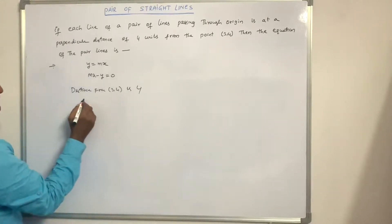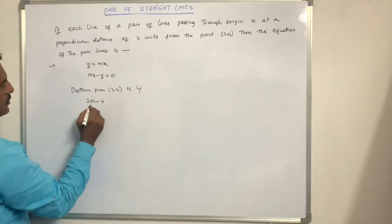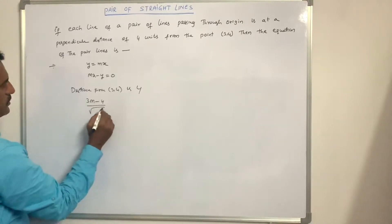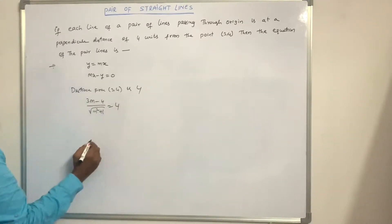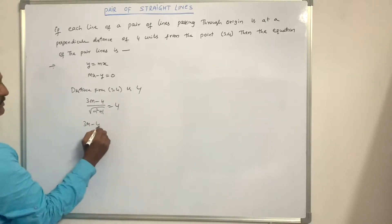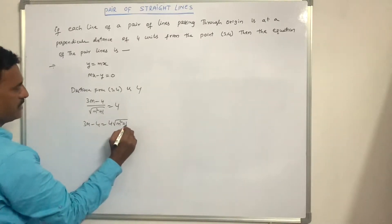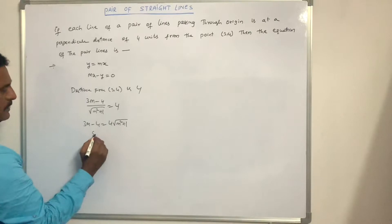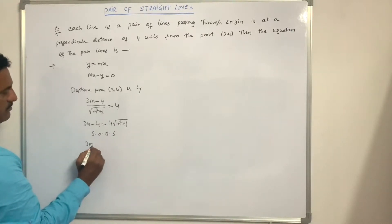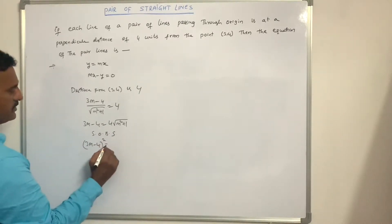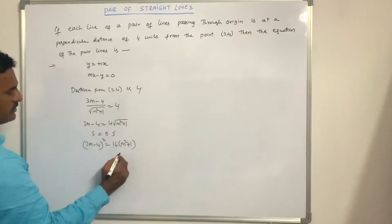So (3m minus 4) divided by the square root of (m² + 1) equals 4. That is, 3m minus 4 equals 4 times the square root of (m² + 1). Squaring both sides, (3m minus 4)² equals 16(m² + 1).